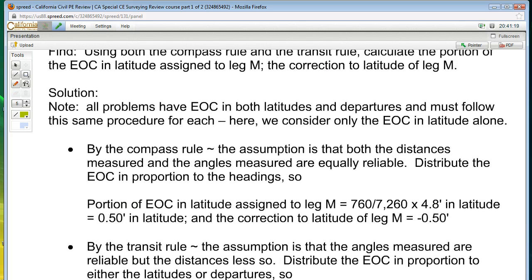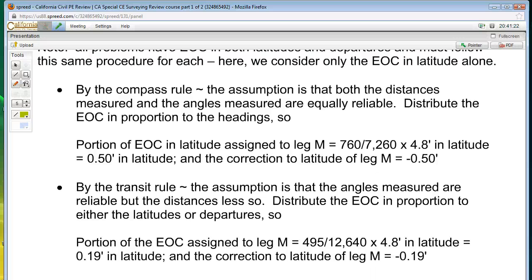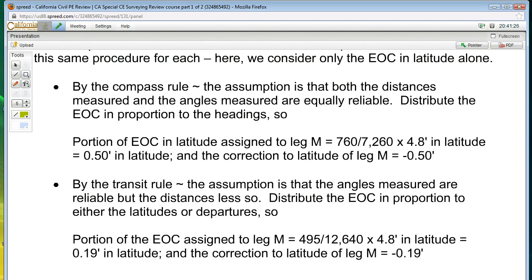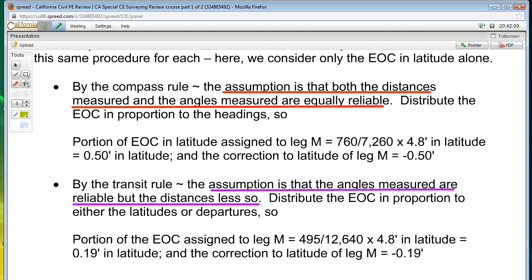By the compass rule, first off, if you're using the compass rule, the underlying assumption that you are making is that both the distances measured and the angles measured are equally reliable. So by using the compass rule, you're saying that the two sets of field measurements are equally reliable. It is not that way in the transit rule. In the transit rule, if you use that one, you are assuming that the angles measured are reliable but the distances less so.